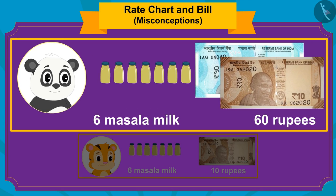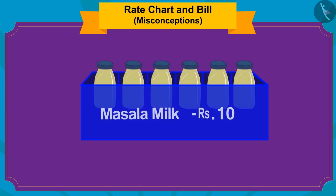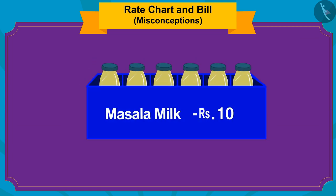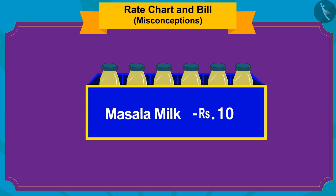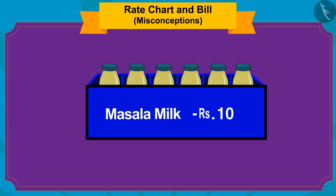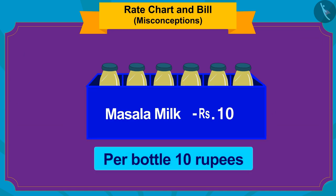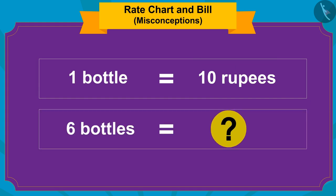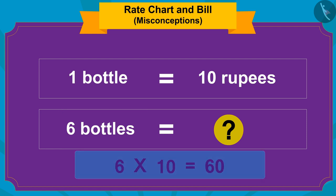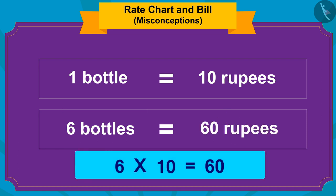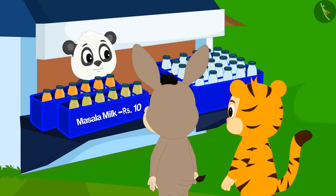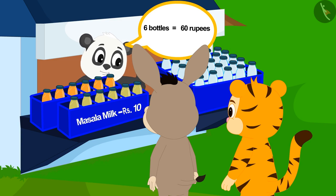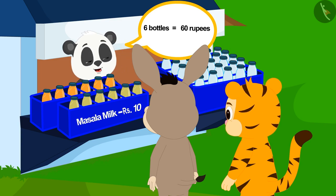Yes, Golu is right! Even though there were six bottles of spiced milk on the tray, the price written was the price per bottle. So if the price of one bottle is Rupees 10, the cost of six bottles will be 6 × 10 = 60 rupees. Golu explained this to Shere Khan and Shere Khan understood it.